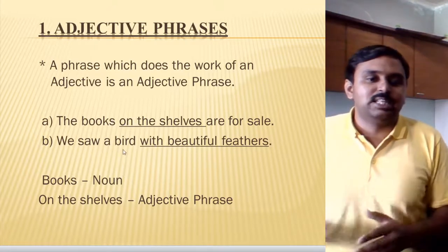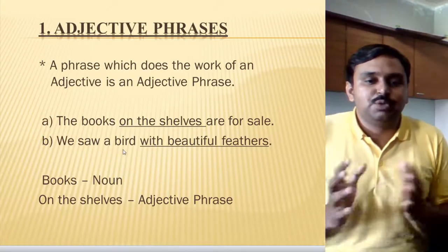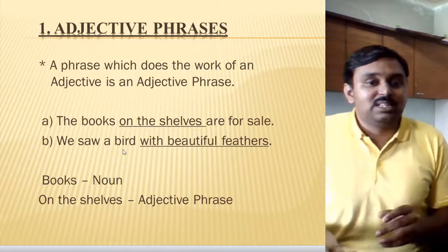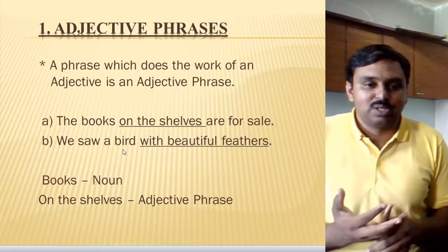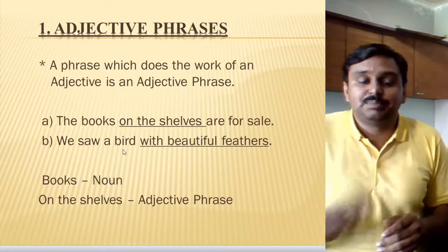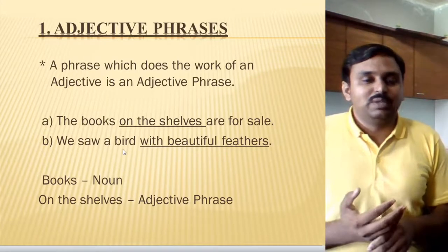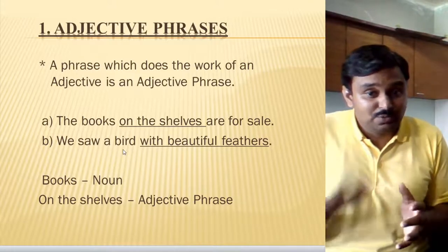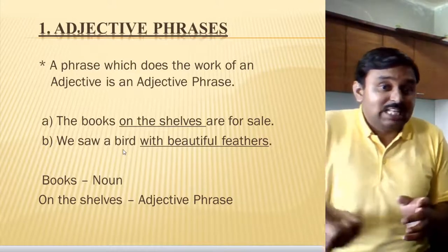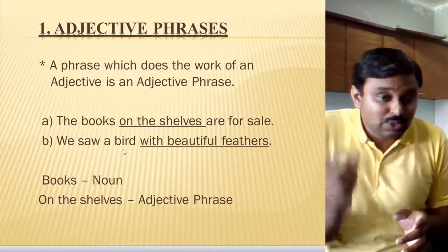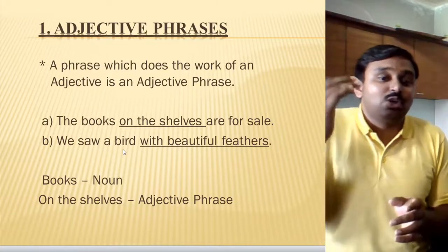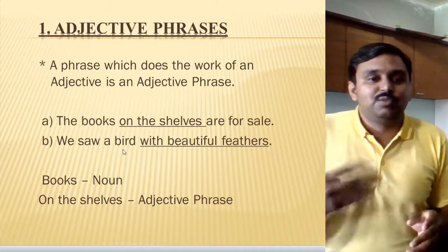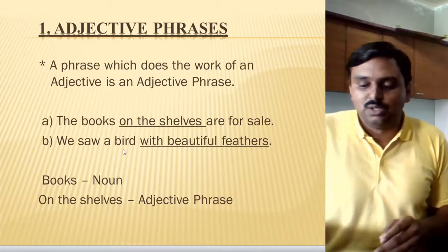For the second example: 'We saw a bird with beautiful feathers.' Now here 'beautiful feathers' is describing the bird. If I ask you the question 'how is the bird,' you will get the answer that the bird has beautiful feathers. That group of words is describing the bird — how the bird is looking and what quality that particular bird has. In this way we identify adjective phrases.